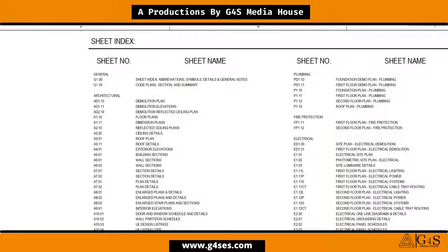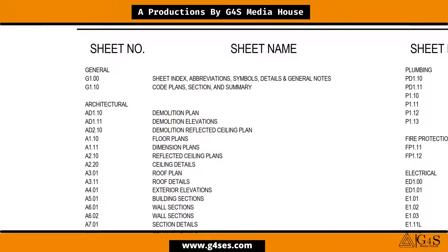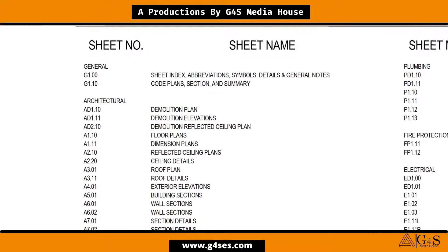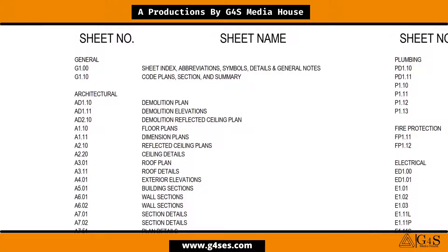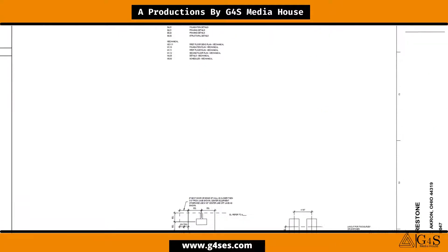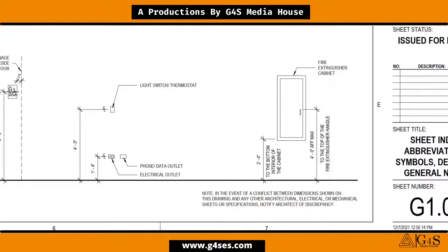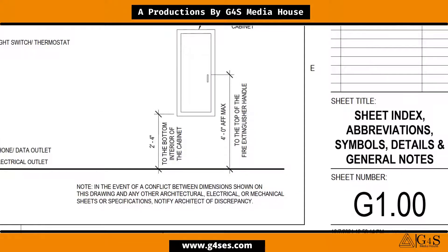The sheet index has two things: first, the sheet number, and second, the sheet name. The sheet number is the number given to the drawing, and the sheet name tells about the nature of the drawing. Sheet number and sheet name are usually printed at the bottom of the drawing, as you can see on this drawing. This format is used for all drawings.